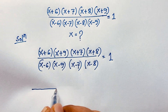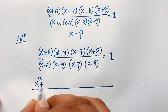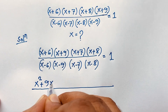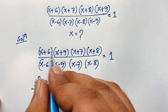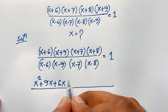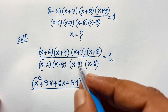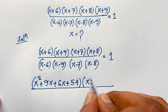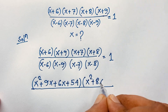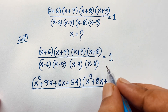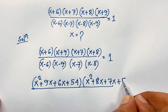Now expanding the numerator pairs: (x+6)(x+9) gives x² + 9x + 6x + 54, and (x+7)(x+8) gives x² + 8x + 7x + 56.